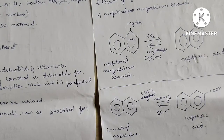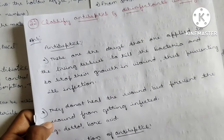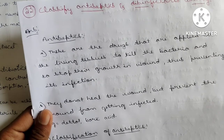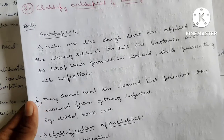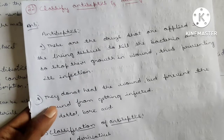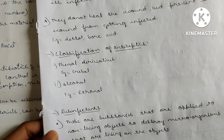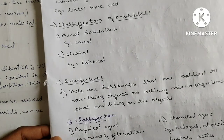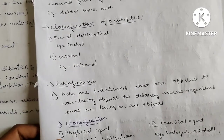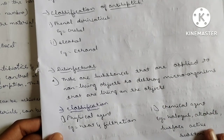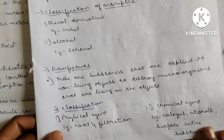Question 22: Classify antiseptics and disinfectants with examples. Antiseptics: drugs applied to living tissues to kill bacteria and stop their growth in wounds, preventing infection — examples include boric acid and hydrogen peroxide. Classification: phenol derivatives, crystal, alcohol, ethanol. Disinfectants: substances applied to non-living objects to destroy microorganisms living on them — such as wiping a table.